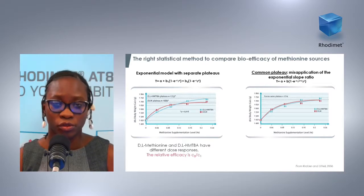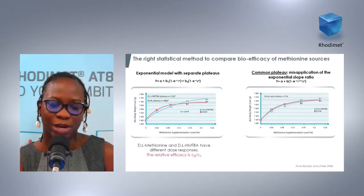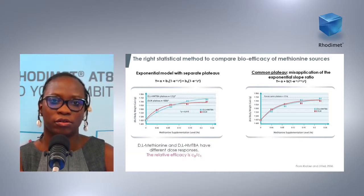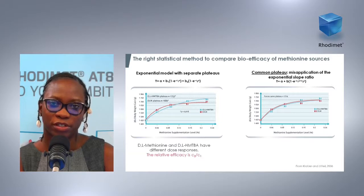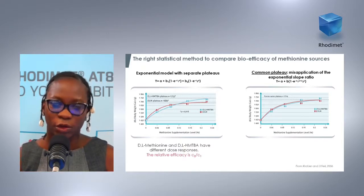Therefore, we cannot use an exponential model with a common plateau to compare them — that's not the appropriate method. Once we use an exponential model with a separate plateau, we calculate the relative bioefficacy, also called the biological value, by calculating the ratio between the slope net coefficients of each growth response curve, and we get a confidence interval around this value. Since the confidence interval includes the value 100, we can conclude that DL-M and HMTBA are fully equivalent and are 100% bioefficacious in broilers and swine.